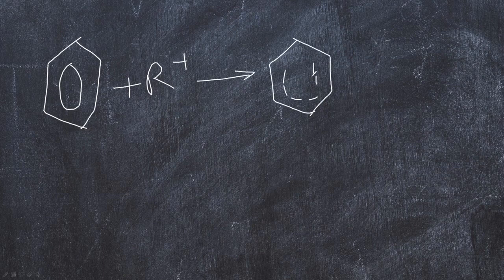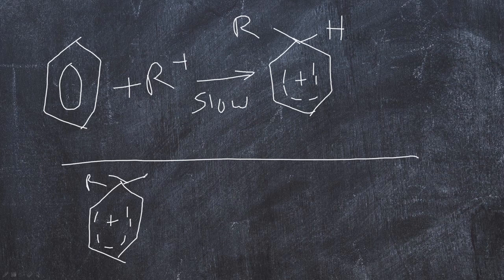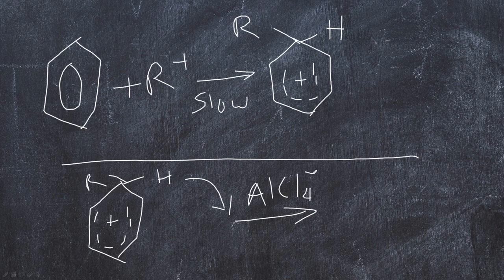This intermediate is the benzenium ion, with the R group and H group combined on the ring. This step is the slow step. The second step is the loss of this hydrogen ion to the nucleophile. The benzenium ion loses the H to the nucleophile — the AlCl4⁻ ion — regenerating aluminium chloride AlCl3 and producing HCl.